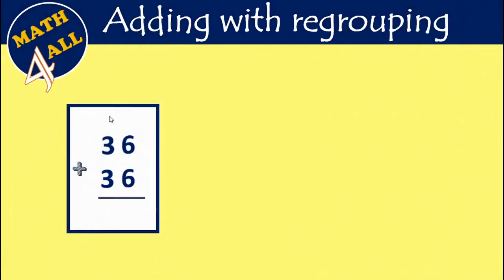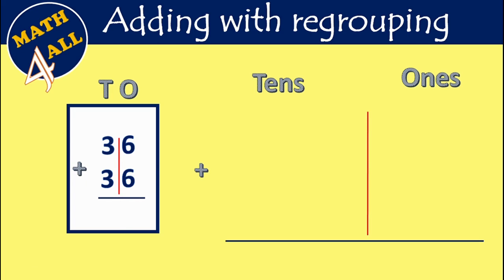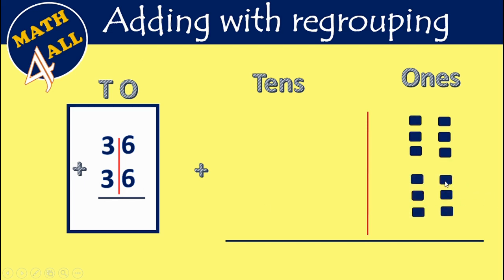What should I do? I will cut between tens and ones. Starting from the ones place: 6 plus 6. Can you add them? After 6 — 7, 8, 9, 10, 11, 12. So 6 plus 6 equals 12.